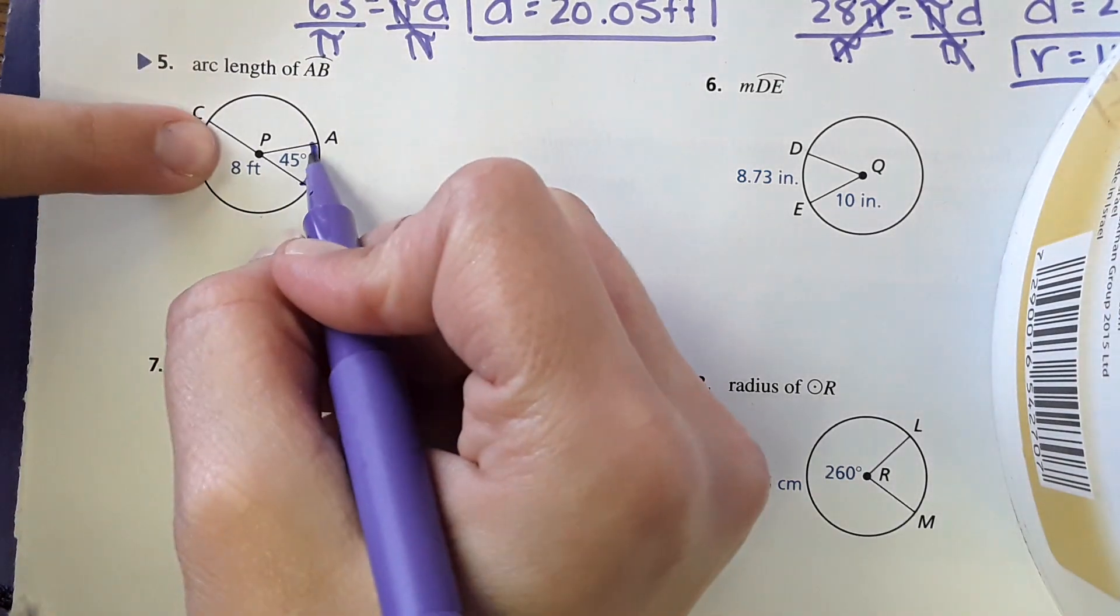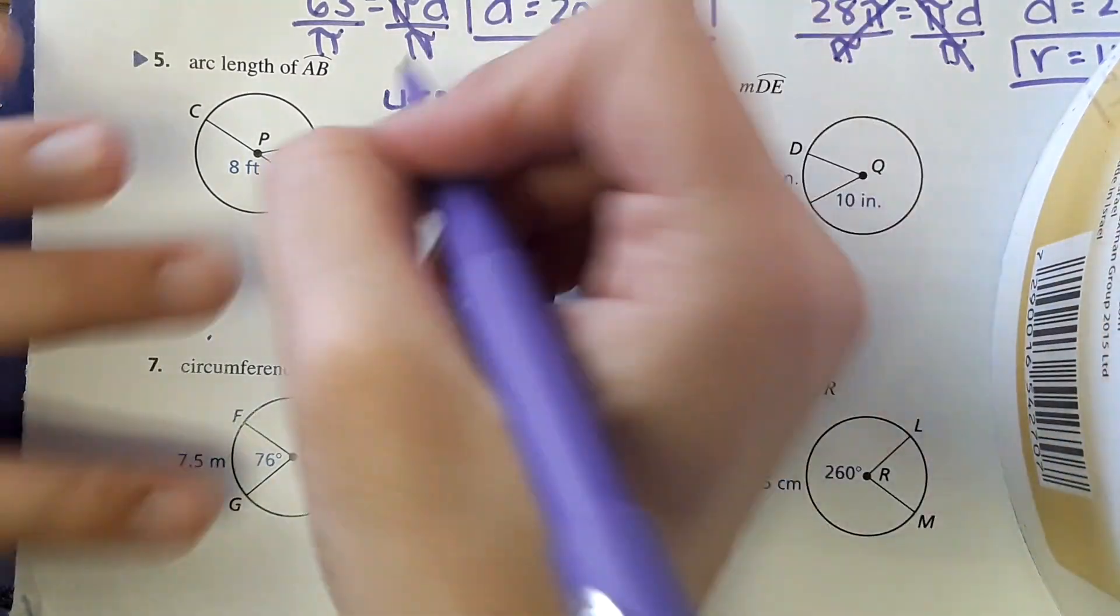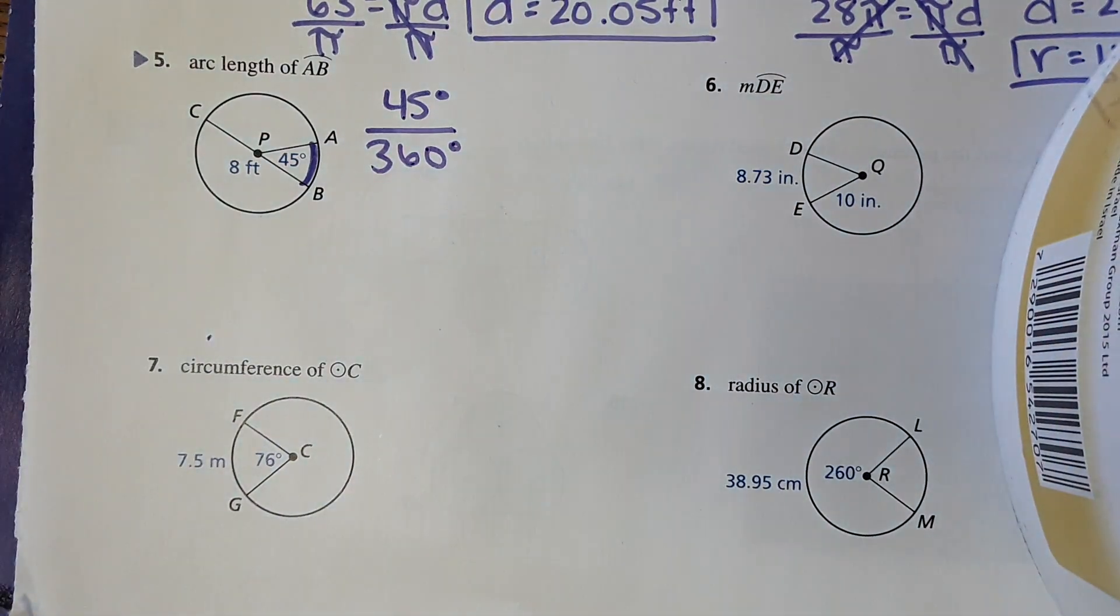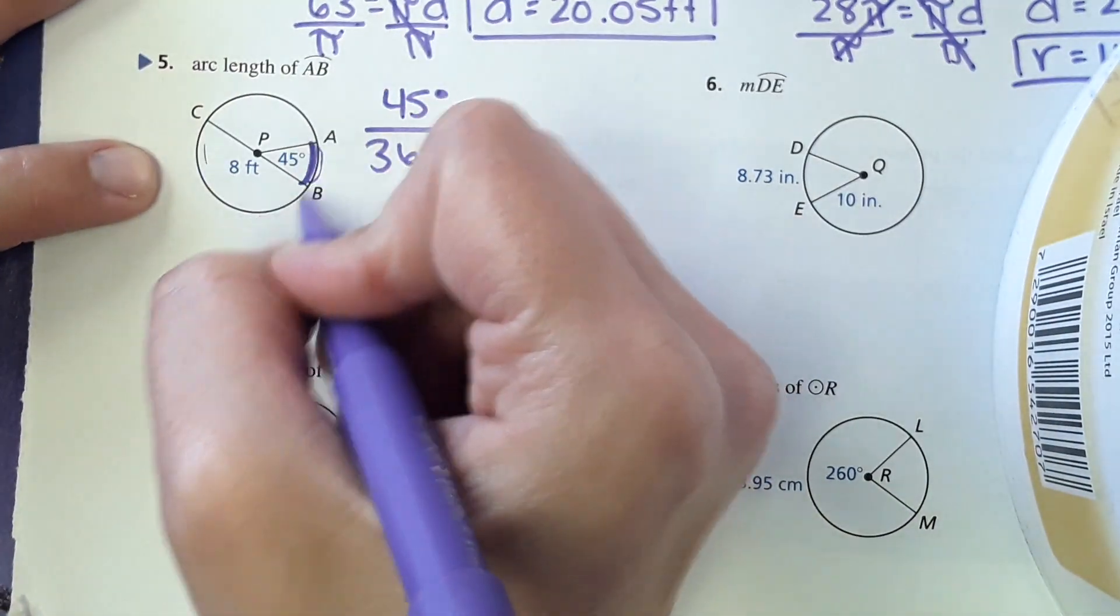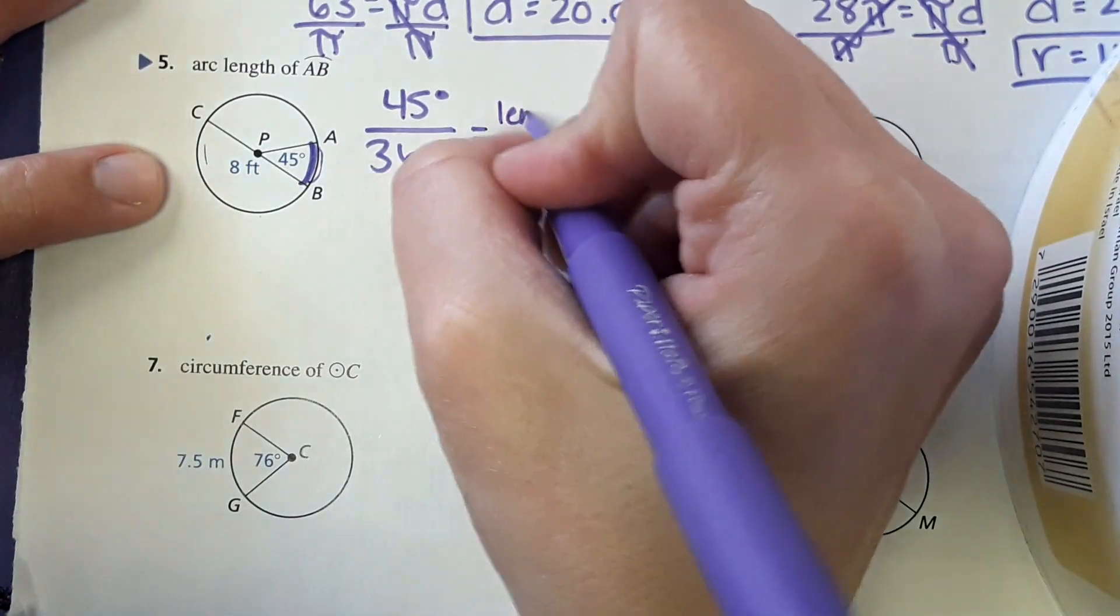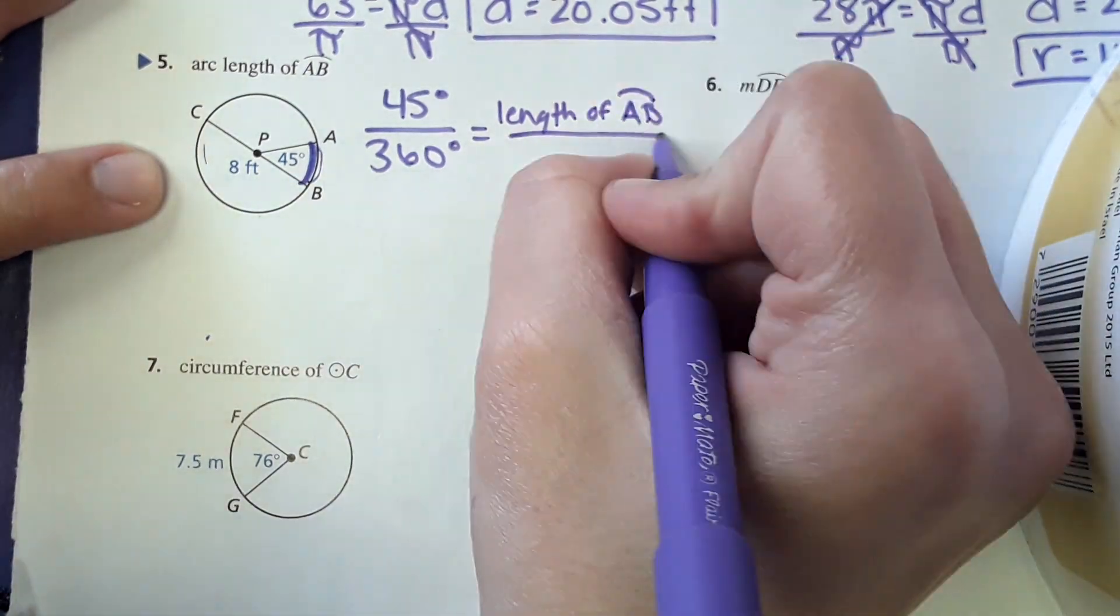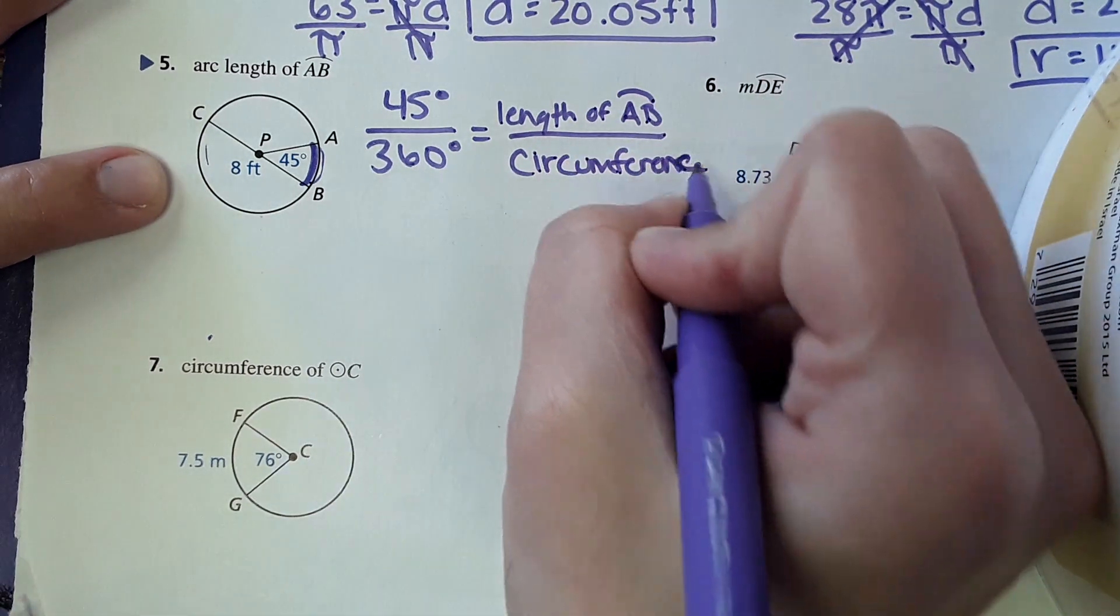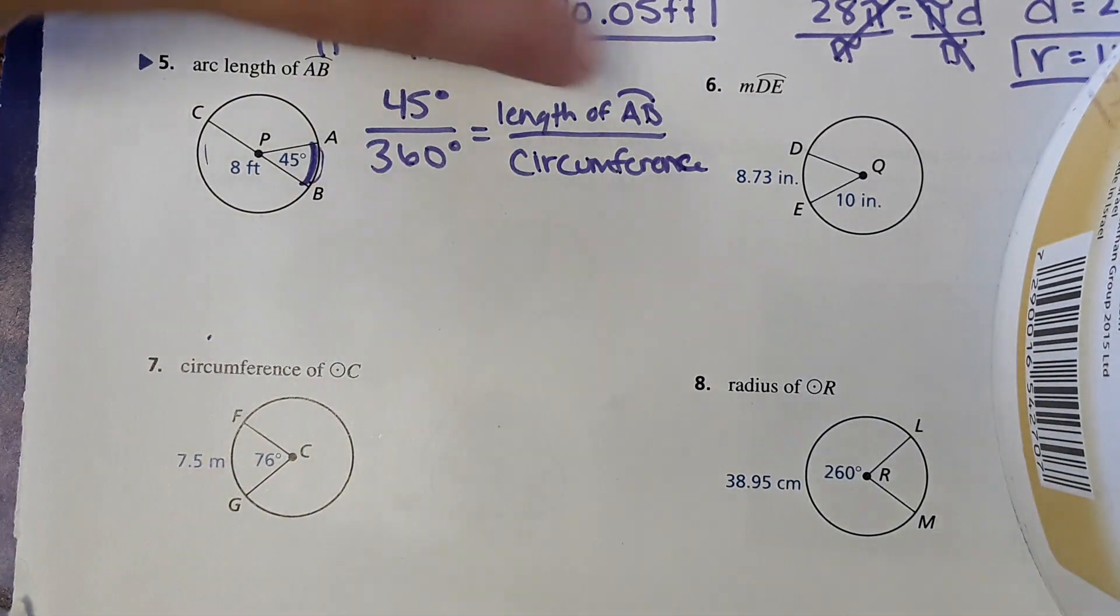So for this ratio we're going to do the 45 degrees for that sector of the circle over the entire degrees of the circle. So it's like part over whole equals the length of this segment over the entire circumference. So the length of arc AB over circumference of the whole thing. So it's part over whole equals part over whole.